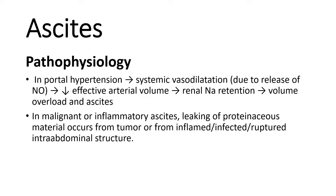Ascites is blood collection in the peritoneal cavity. The pathophysiology in portal hypertension: ascites is due to systemic vasodilation caused by release of nitric oxide, which leads to decreased effective arterial volume and renal sodium retention, resulting in volume overload.